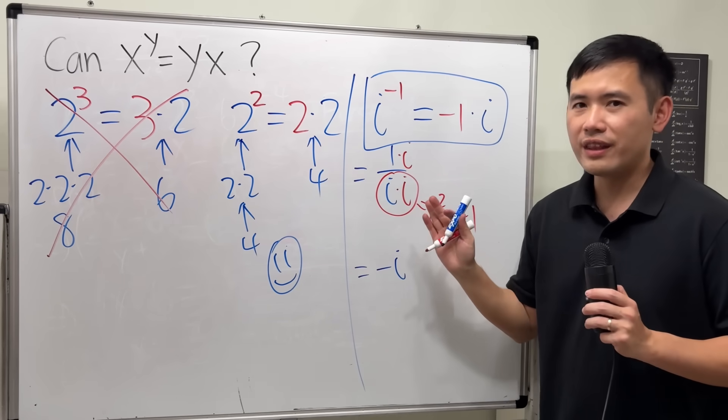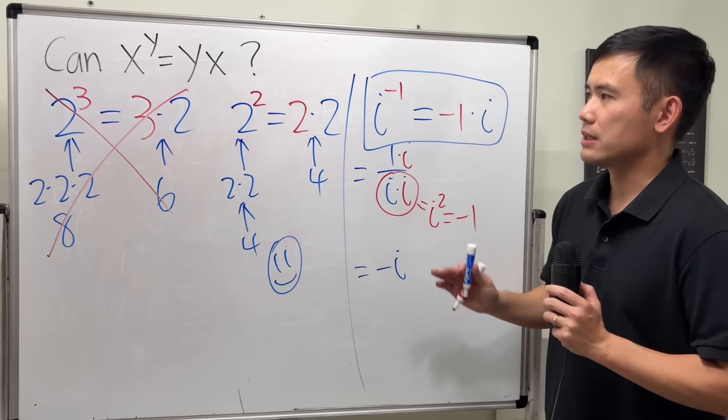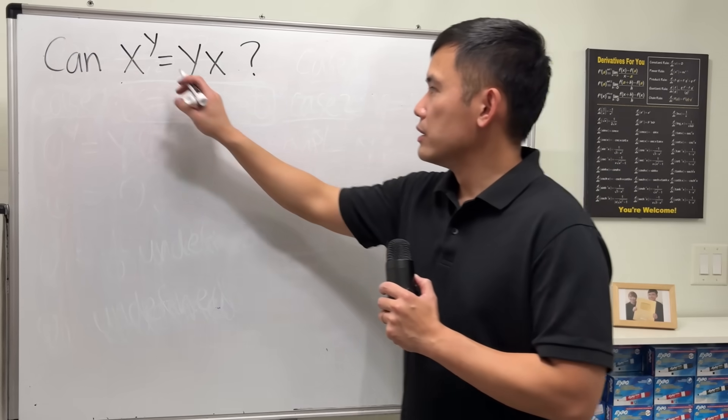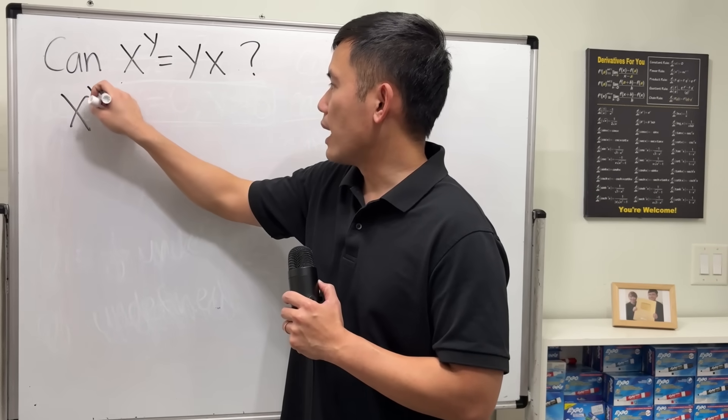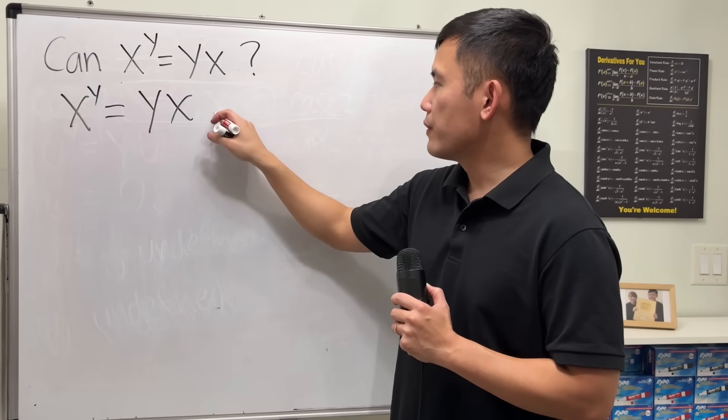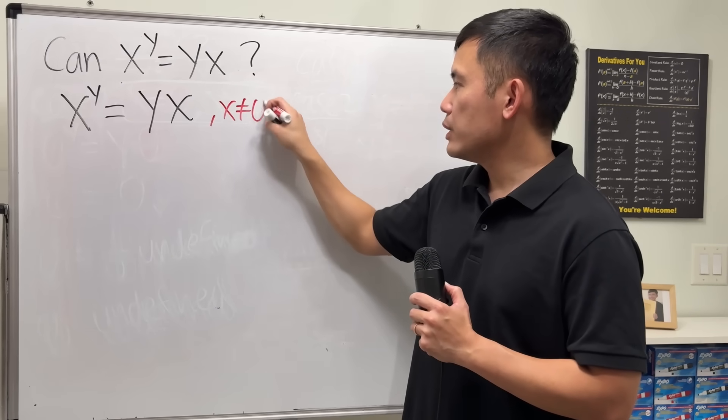Of course, we are not done yet because we have to see if we can find out more possibilities for this. So now, let's do it. Here we go. Start with the equation x to the y is equal to y times x.